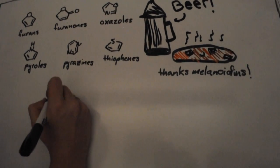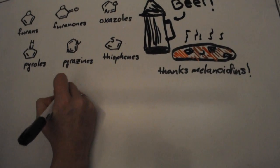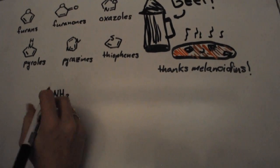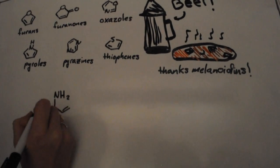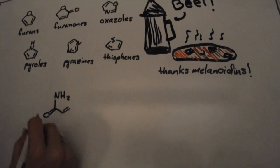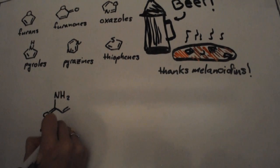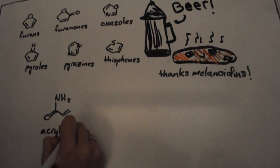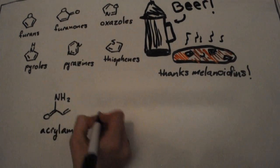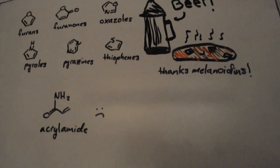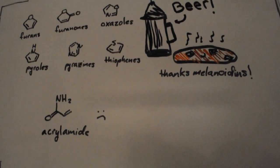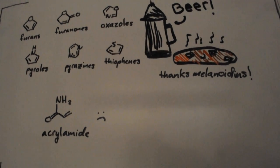The Maillard reaction thus leads to hundreds of different products from the N-substituted glycosilamine, and not all of them are good. Levels of a possible human carcinogen, acrylamide, formed as a byproduct of the reaction between amino acids and sugars rise as heating time increases. So if anyone's ever warned you about eating burnt foods, they might have been right.